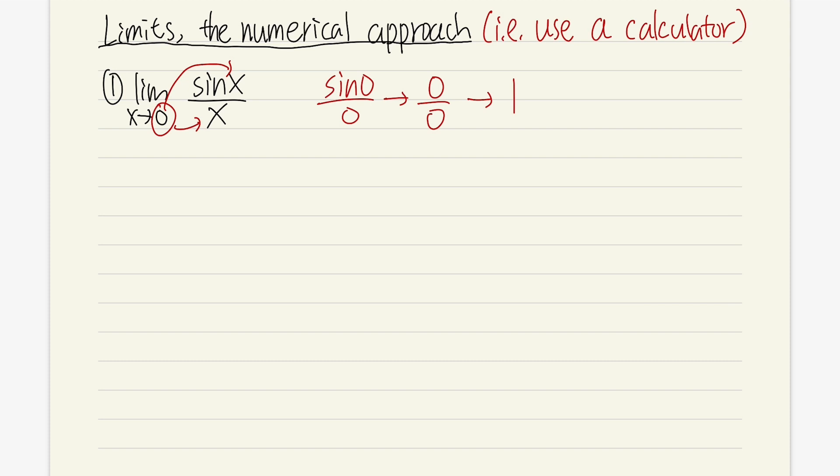Because anything divided by 0 is just 1, like 22 divided by 22 is 1, 15 divided by 15 is 1. So this should be 1, and we are done, right? But wait, didn't we talk about it if we have a 0 on the bottom, the answer is just undefined? So, which one is it?